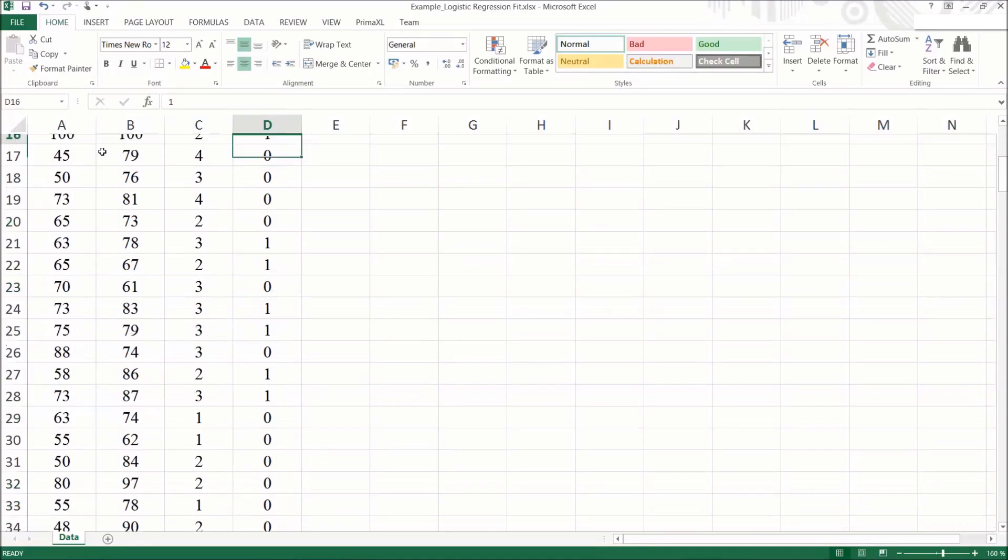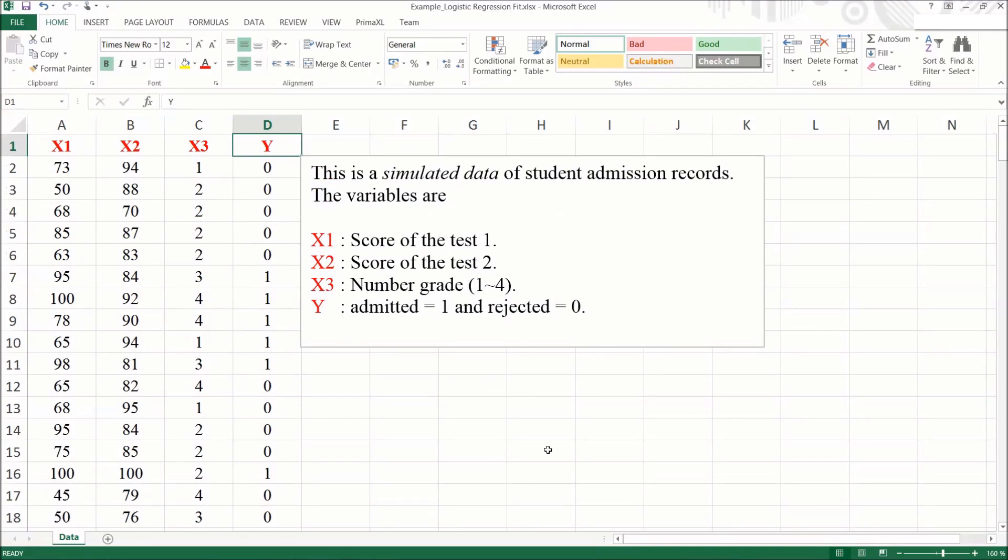By the way, where does this table come from? Well, this is a simulated data of student admission records. The variables have the following meanings.